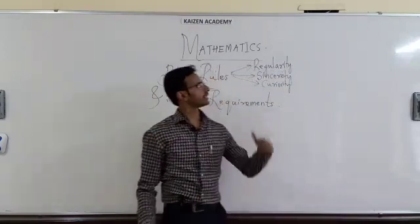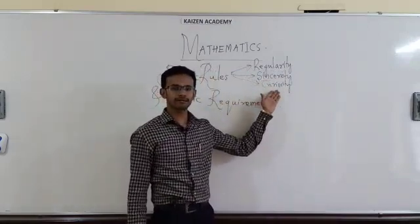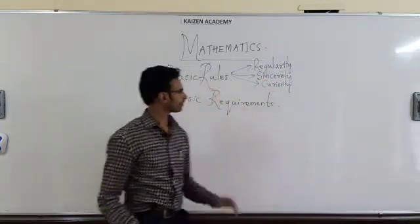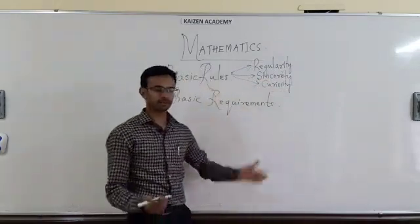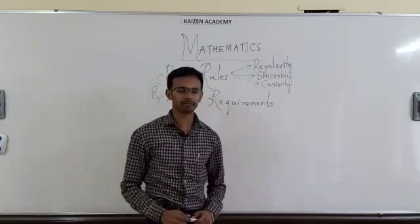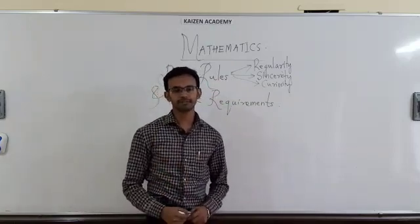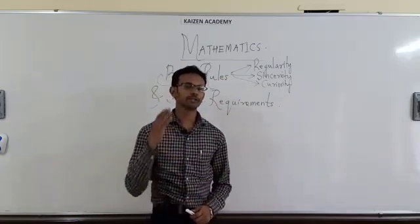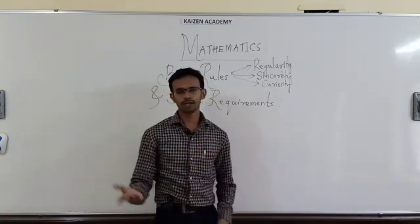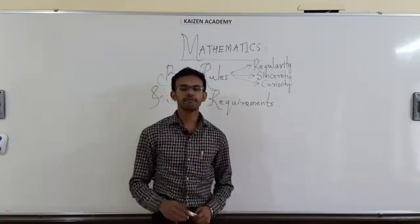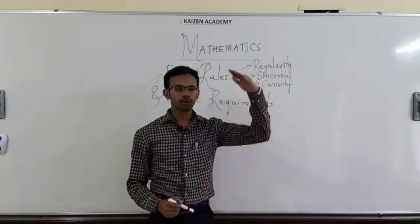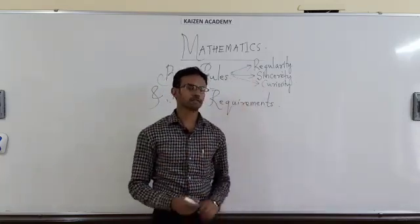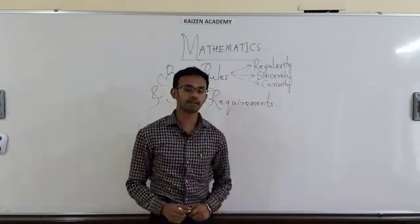As you will be regular and sincere, the third criteria, curiosity, will develop automatically. In mathematics, the basic requirements - the first and foremost thing I demand from my students is tables. They generally lack in tables. We need students very strong in tables from two till twelve. If you are strong in these tables, you can conquer the world of mathematics.